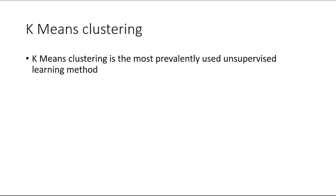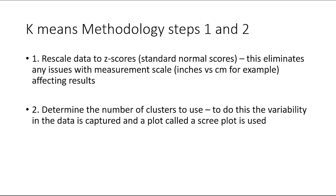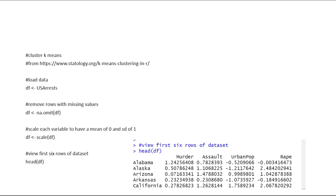The clustering technique I'll introduce is called k-means clustering — probably the most prevalent method used. The first thing you do is rescale the data to standard normal scores. The reason is that data is typically on some measurement scale like inches or centimeters, and you don't want that distorting your clustering, because clustering uses mathematical distances. You need to even out those distances by scaling to a standard normal score — Z scores — with a mean of zero and a standard deviation of one, making things independent of the original scale of measure.